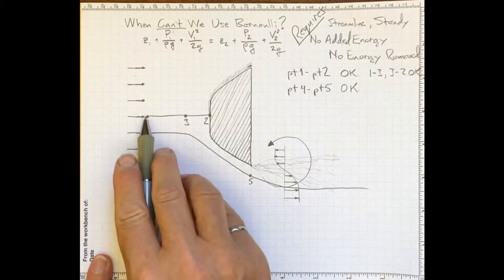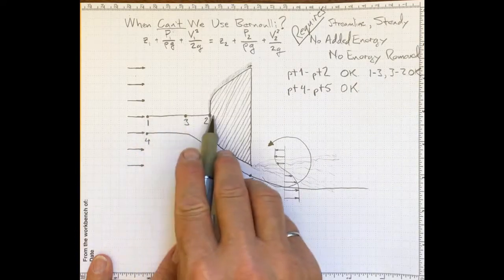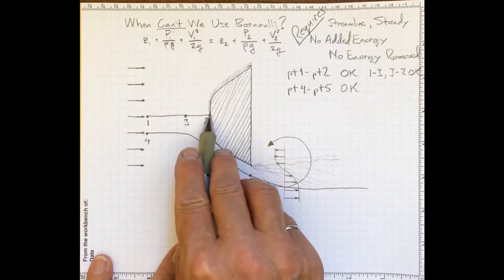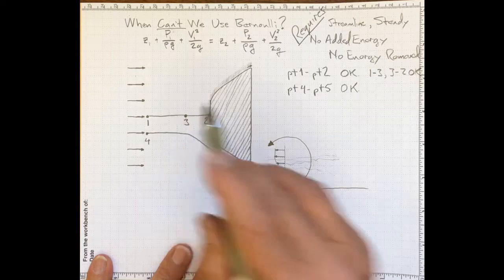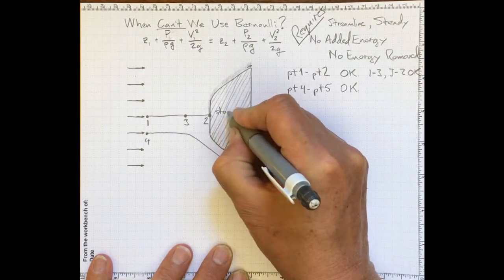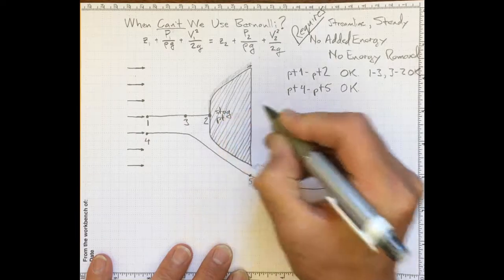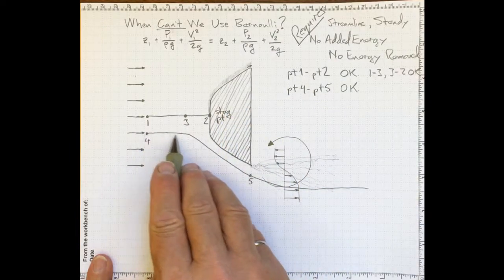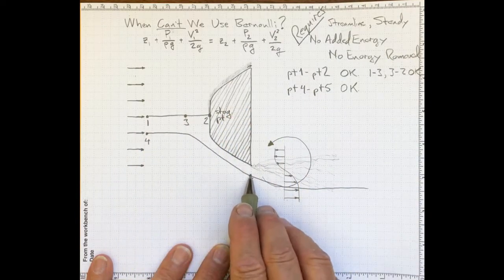But we'll find the exact opposite to this movement from one to two. Coming to a stop, the pressure went up to the stagnation pressure, because that's a stagnation point. Over here, the flow accelerated and the pressure went down, because it was speeding up to get around the obstacle.